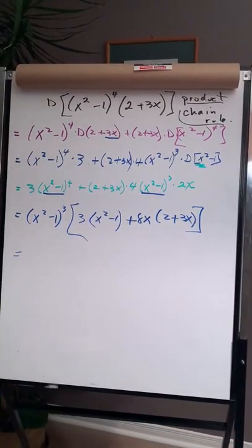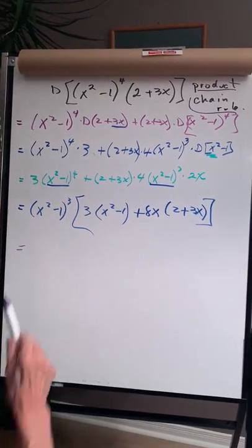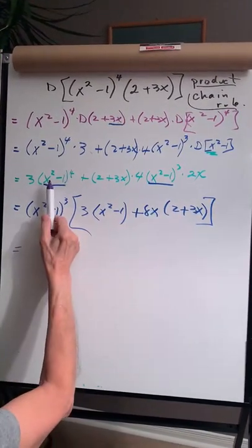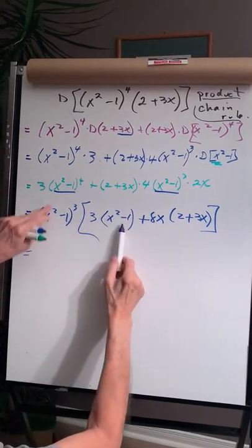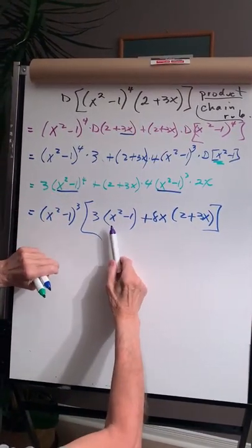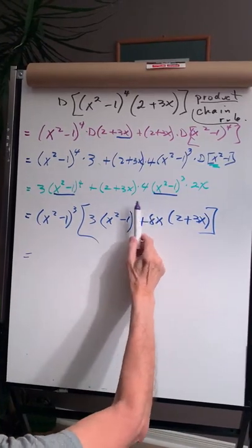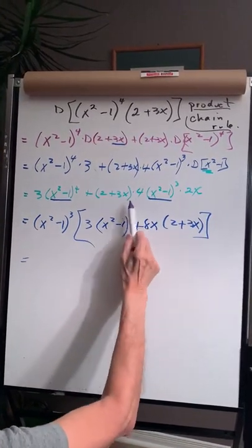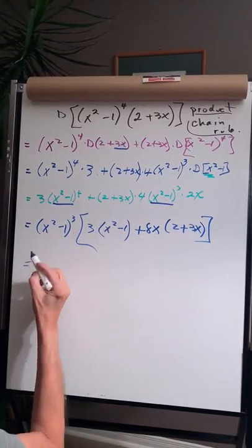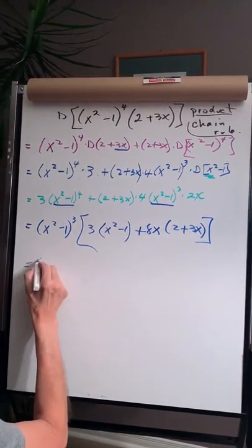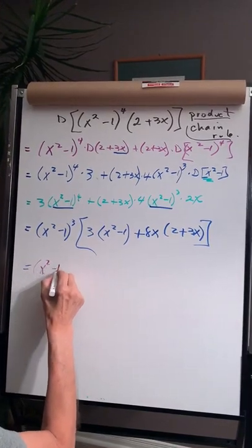All right, so let's look at that once again. This is the common, this comes out of here, common factor. This times this is this. And over here, I have, this goes into this evenly, so it's gone, so I'm left with 4 times 4 is 8, and this. Leave this alone over here, x squared minus 1 cubed.